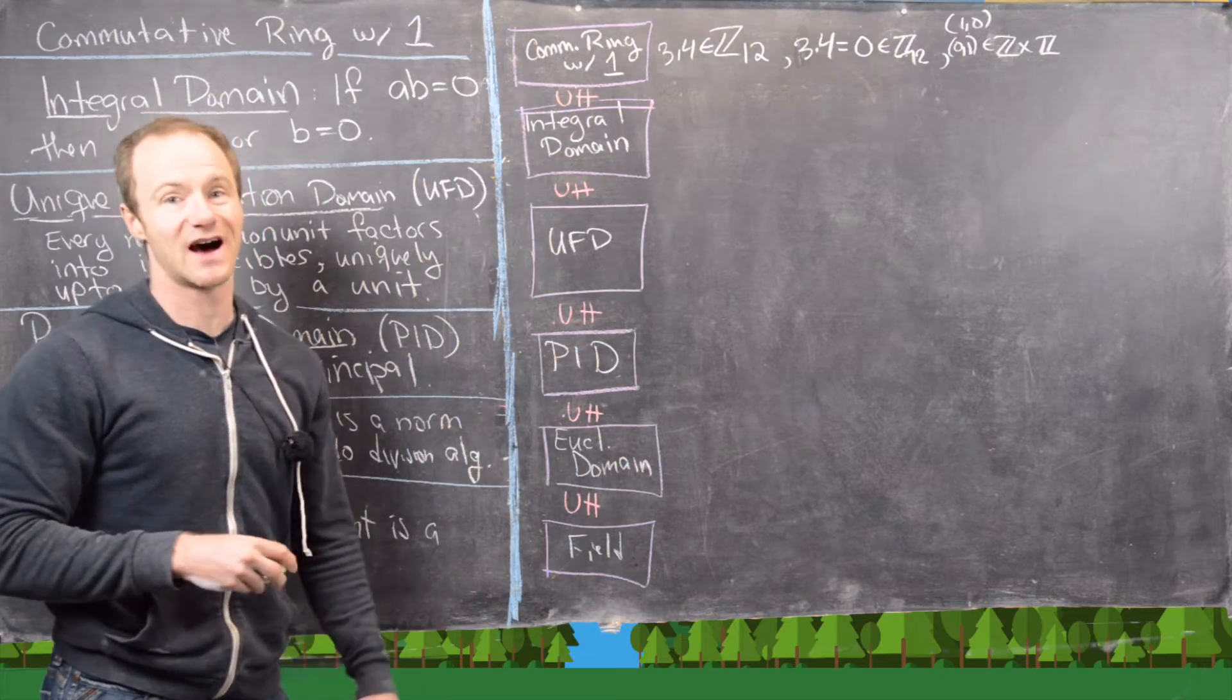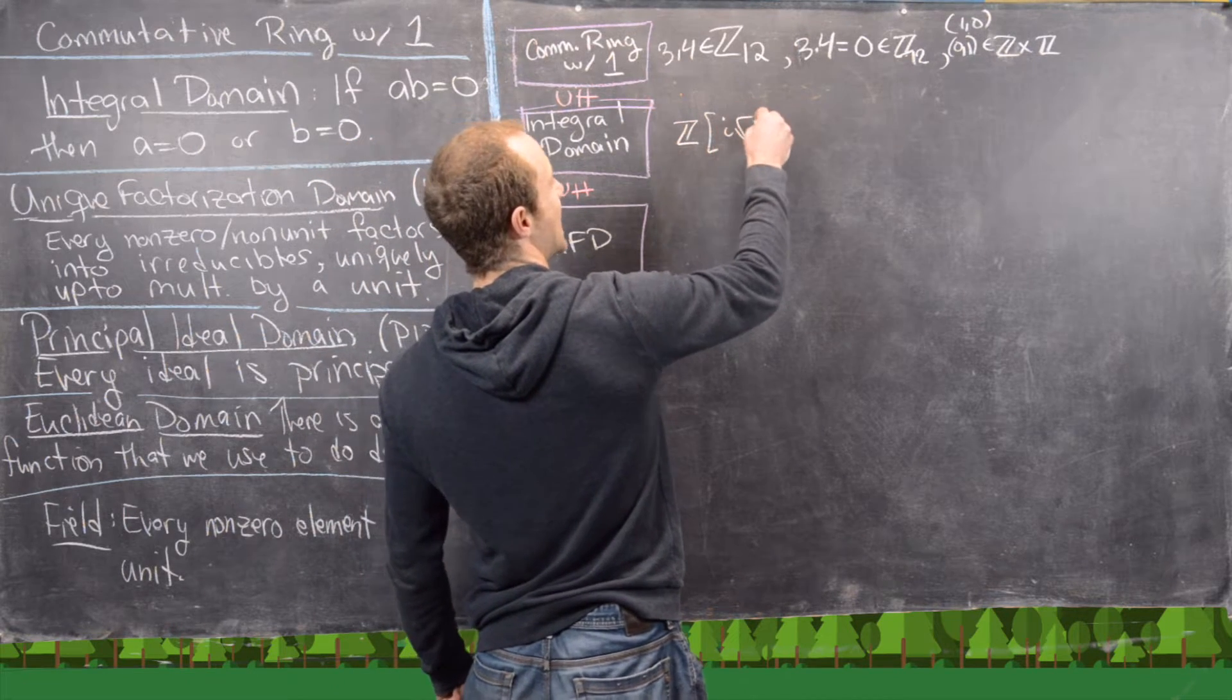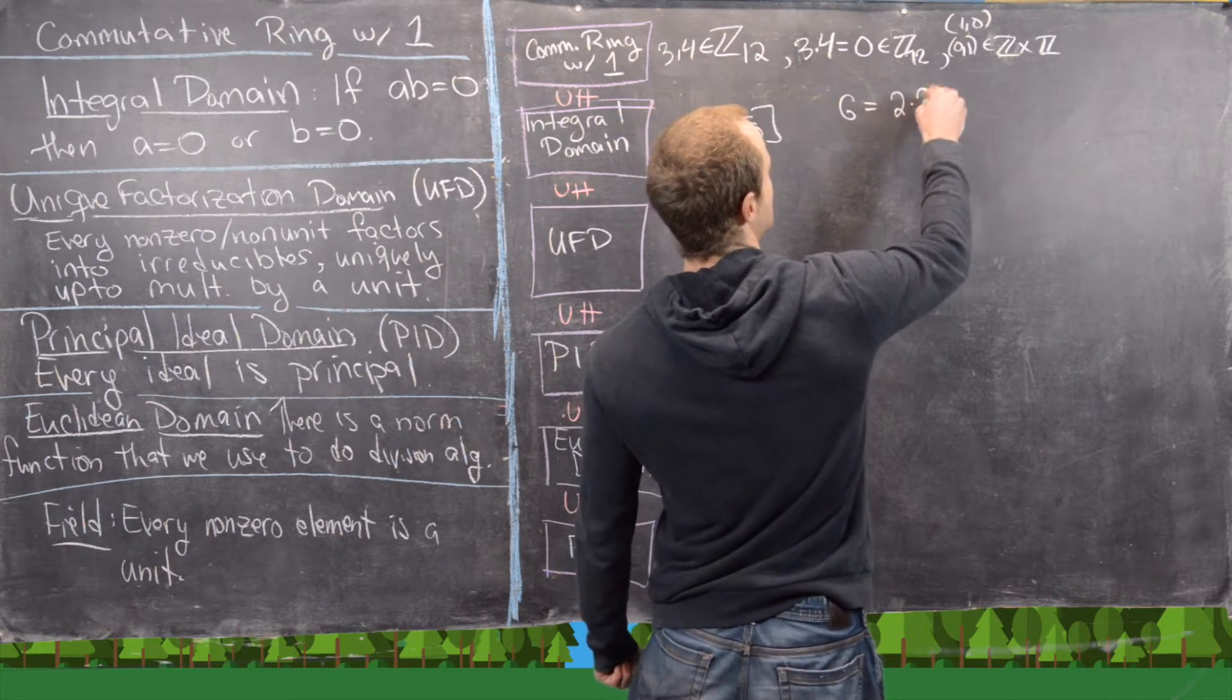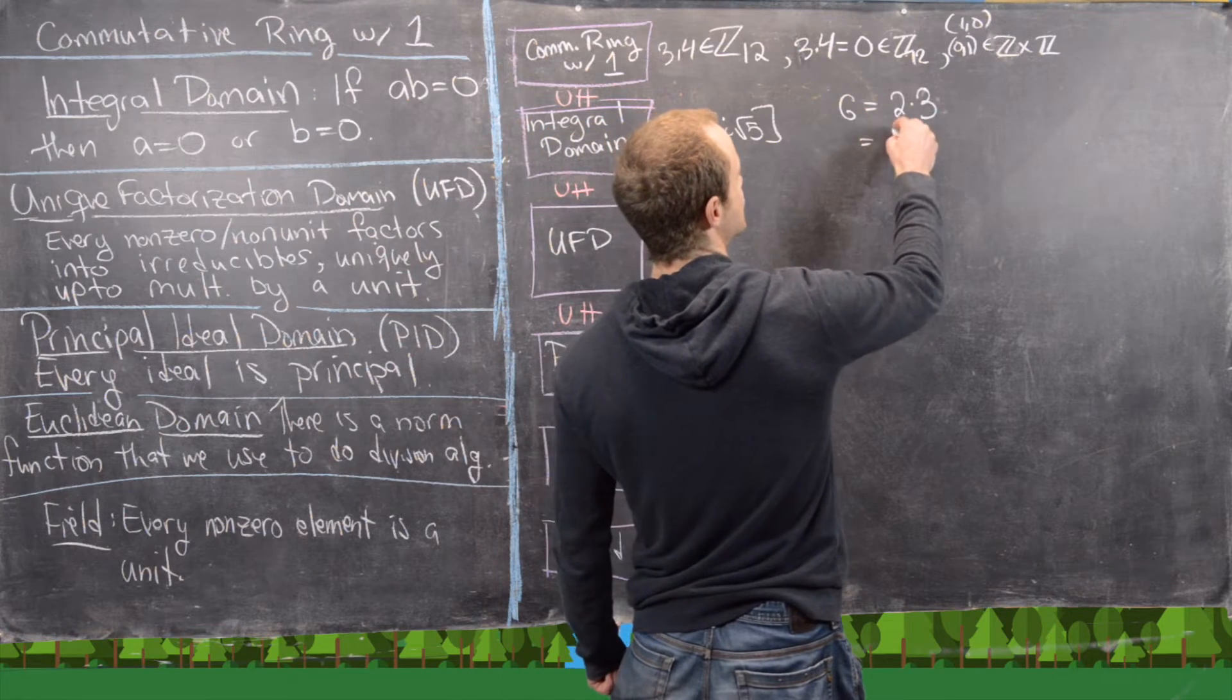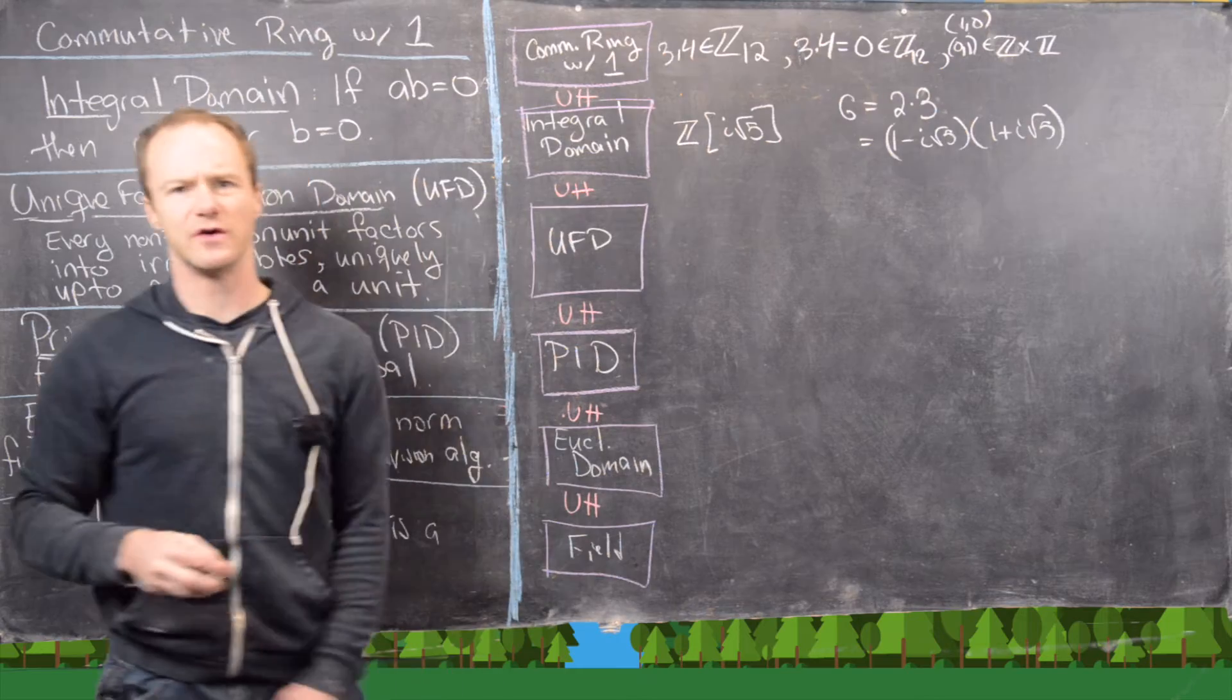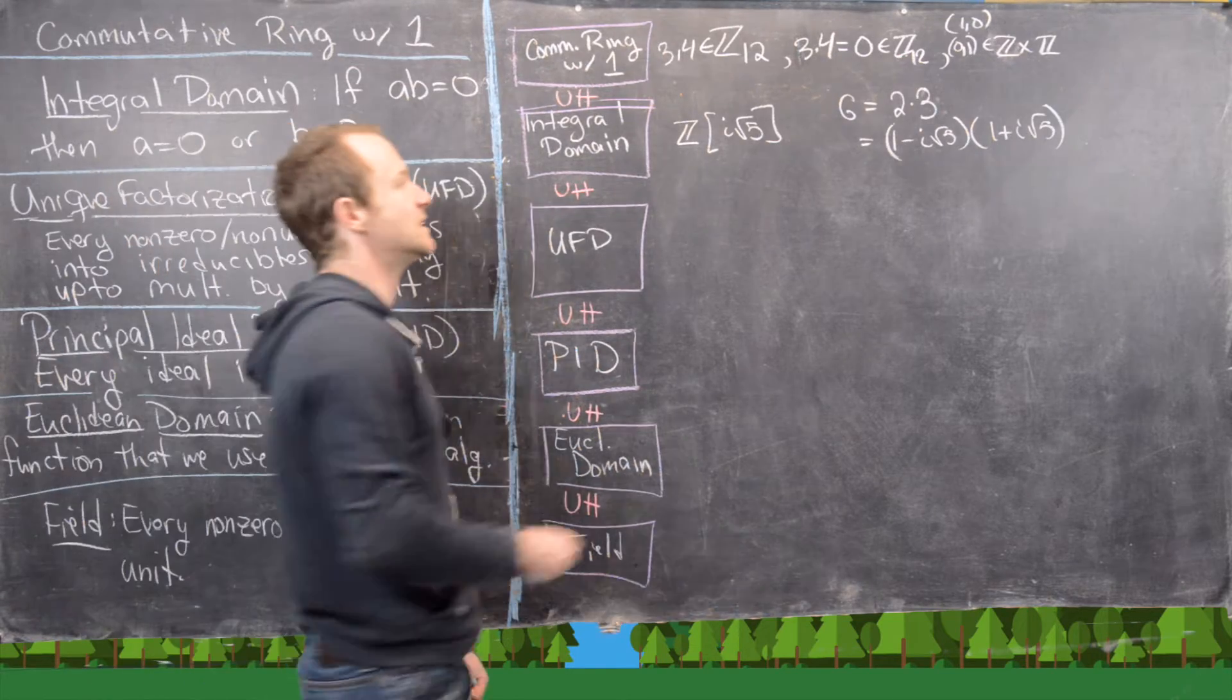Now let's look at some integral domains that are not UFDs. So there's a bunch of examples of these. Maybe an interesting one is Z adjoined I times root 5. And here you can see that the number 6 factors two ways. It factors into 2 times 3 and it factors into (1 minus I root 5) times (1 plus I root 5). And then you can show that those guys are not associates of each other. In other words, this factorization is not unique up to multiplication by a unit.